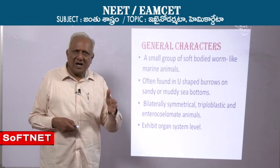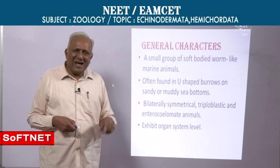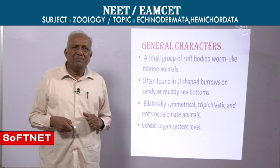Like Echinoderms, they are triploblastic, but not pentaradially symmetrical — they are bilaterally symmetrical. Another character they share with Echinoderms is the coelom type: like Echinoderms, they are also enterocoelmates.